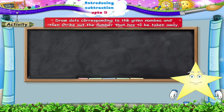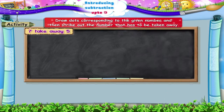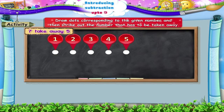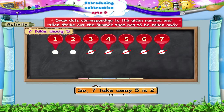Let us do the next one. Seven take away five: one, two, three, four, five, six, seven dots. Strike out one, two, three, four, five dots. What remains is one, two dots. So seven take away five is two.